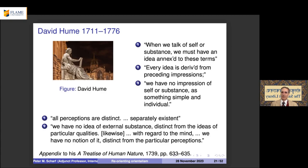Hume says when we talk of the self or substance — substance being the basis of some external real entity — we must have an idea next to those terms. But every idea is derived from preceding impressions, and we have no impression of a self or of a substance — no atman, no dravya — as something simple and individual. All perceptions coming through our senses are distinct and separately existent.